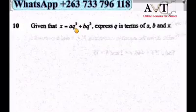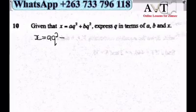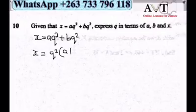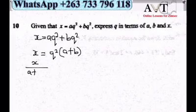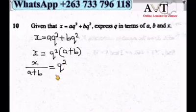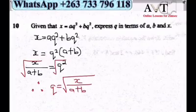Question 10: Given x = aq² + bq², make q the subject. Factor out q²: x = q²(a + b). Divide both sides by (a + b): q² = x/(a + b). Take the square root: q = √(x/(a + b)).